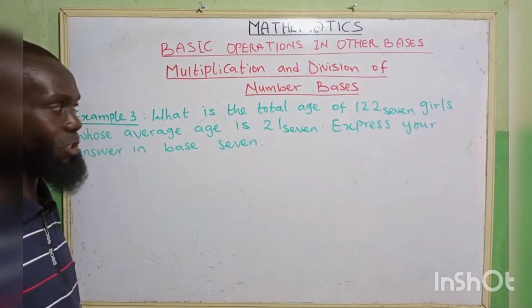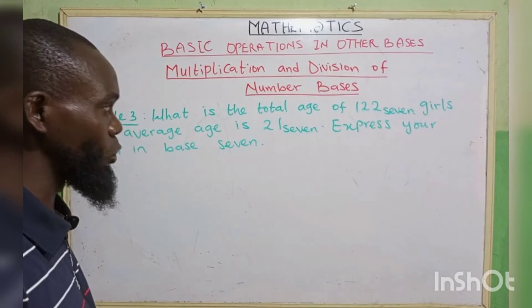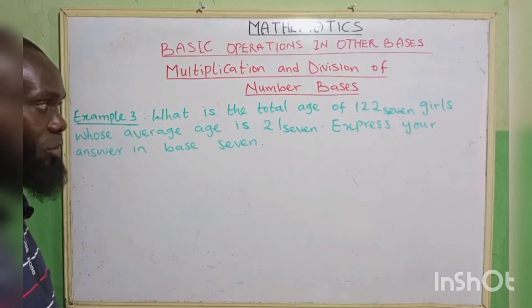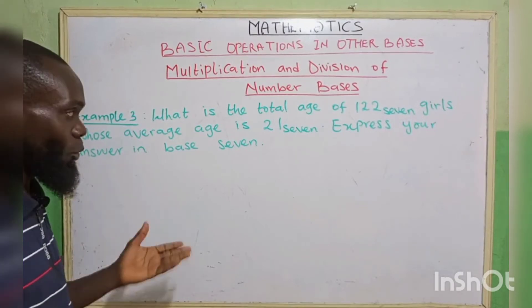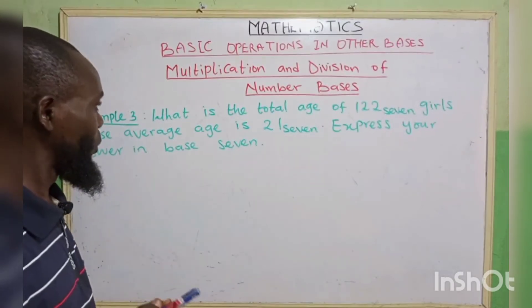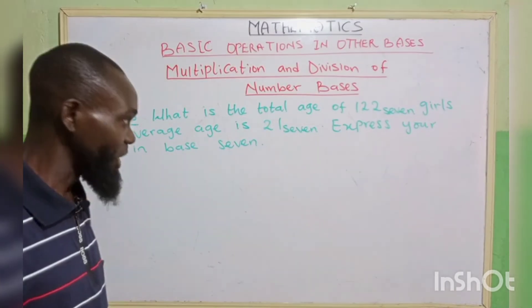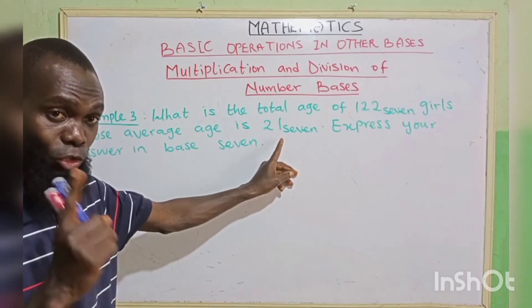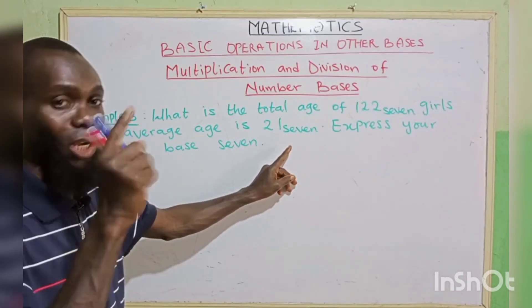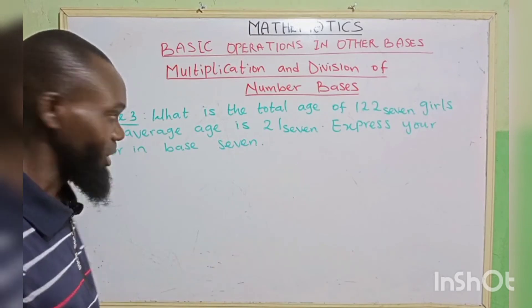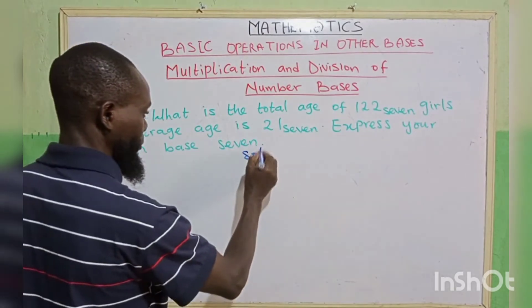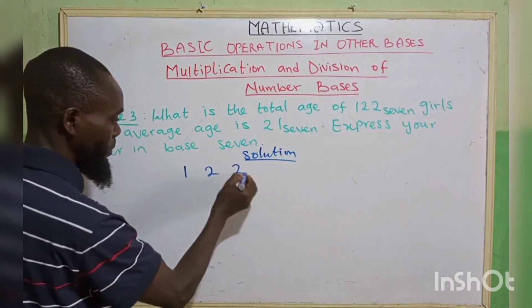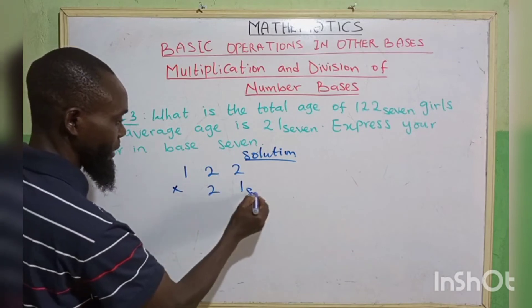Example 3: What is the total age of 122 base 7 girls whose average age is 21 base 7? Express your answer in base 7. What we're saying here is, what is the total age of 122 girls if each of them is 21 years? So if each of them is 21, then how many is going to be 122? So that is multiplication. That is 122 multiplied by 21 base 7.